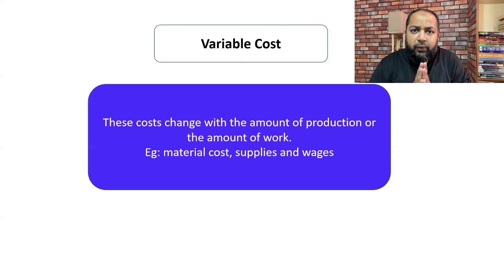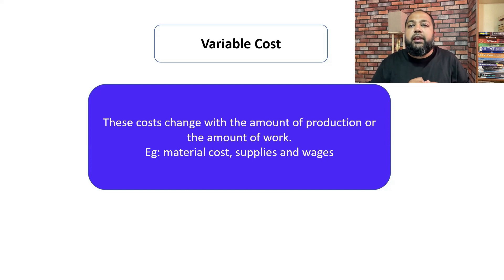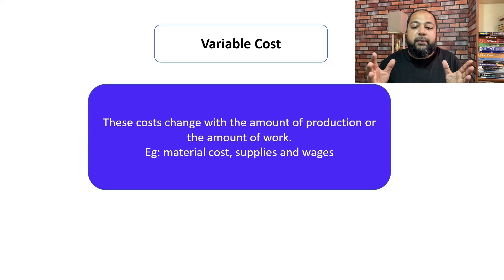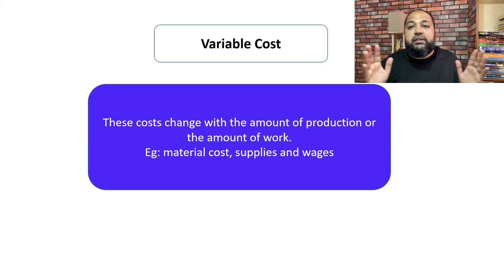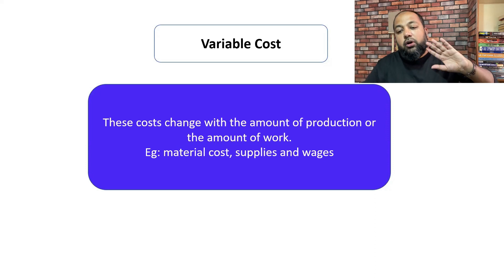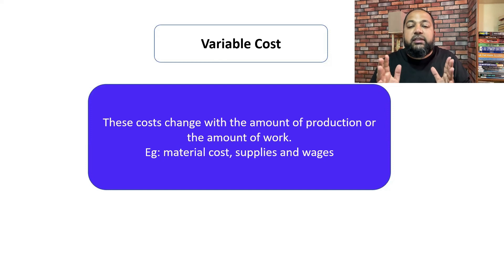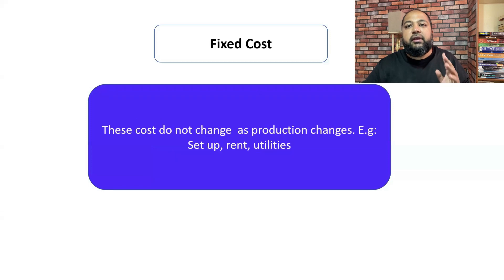When estimating the project, there are different kinds of costs you incur. Variable cost: if you have a senior person their cost will be more; a junior person will cost less, so wages vary. Supplies of lower quality cost less, better quality costs more — so materials and wages vary. These costs change based on the amount of production or work getting done. If people work longer you pay overtime — all this is variable cost.